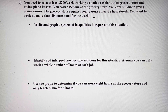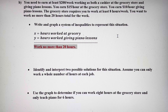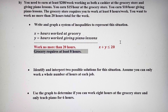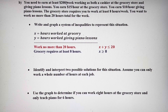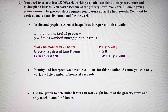Define our variables: x is hours worked at the grocery store, and y is hours worked giving piano lessons. First: work no more than 20 hours total, so x plus y is less than or equal to 20. Second: grocery requires at least eight hours, so x has to be greater than or equal to 8. Finally, we want to earn at least $200: 15x plus 10y has to be greater than or equal to 200.